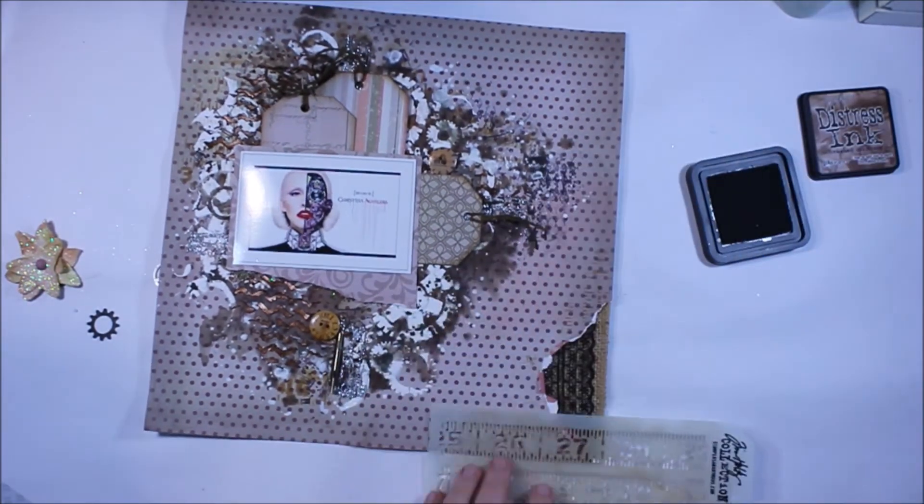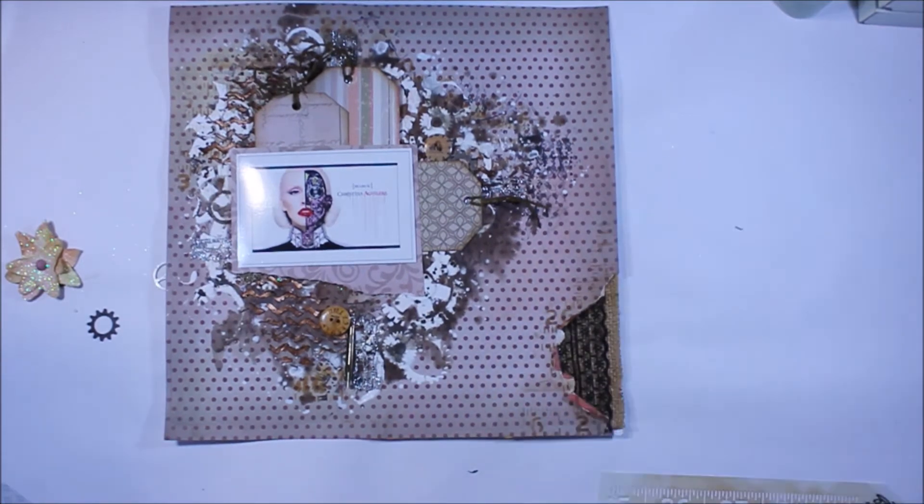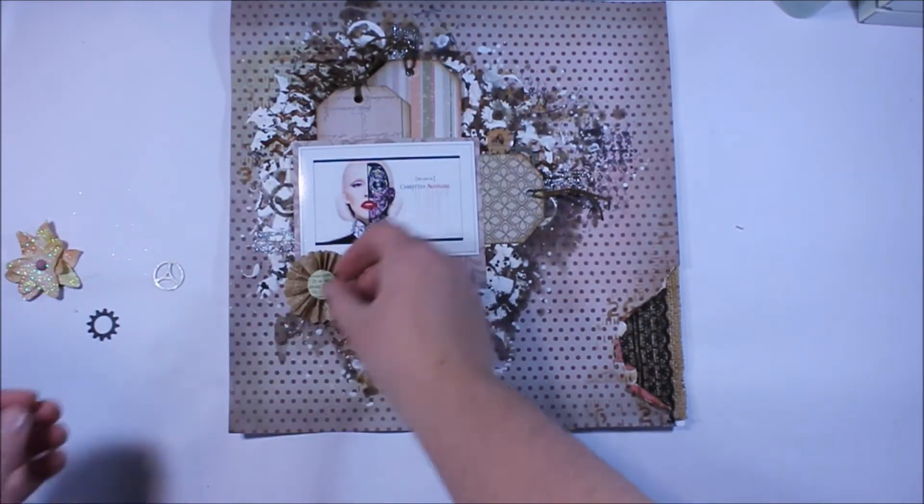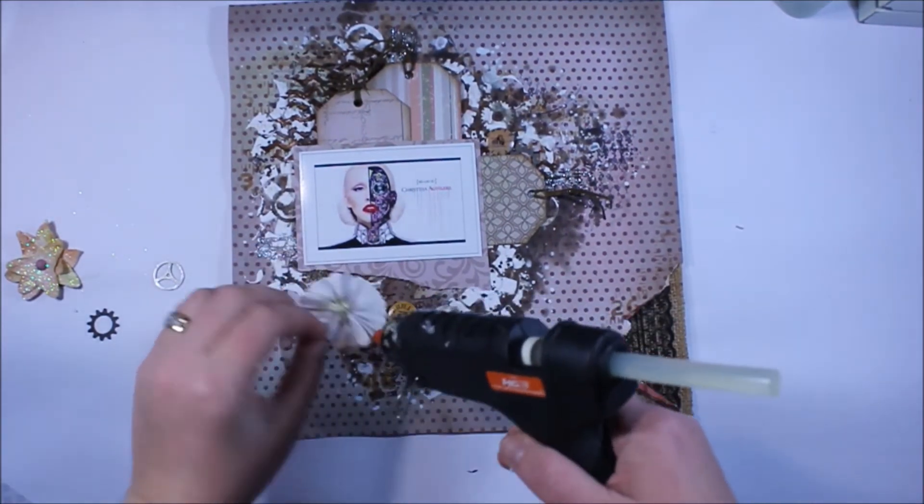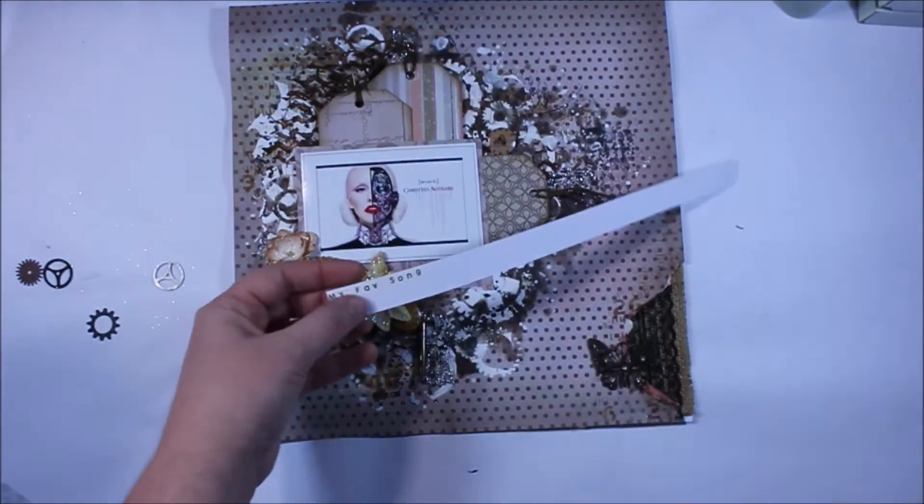So I've just torn a little section, added some lace ribbon, gone through the same sort of process steps as what I did to create the background of the main mixed media area. So I'm going to go ahead and glue a few things down.